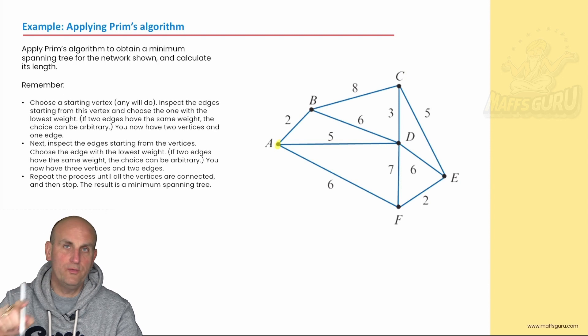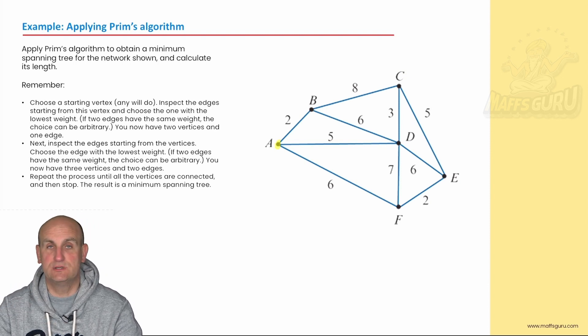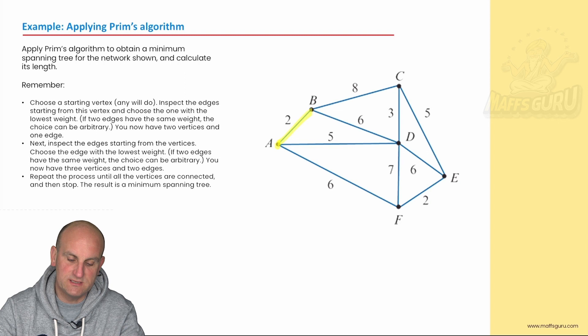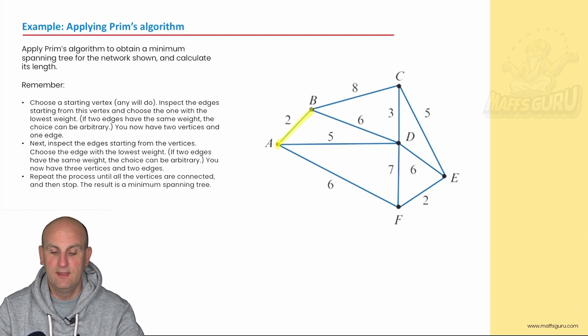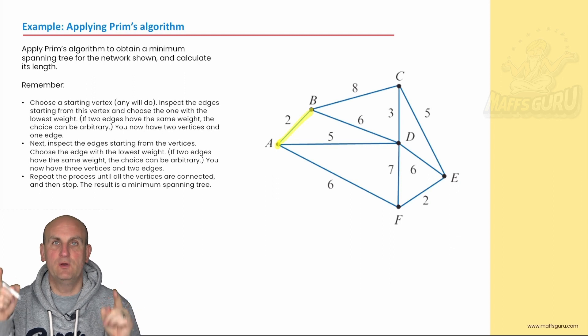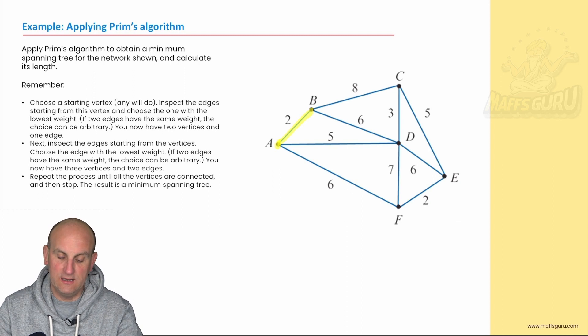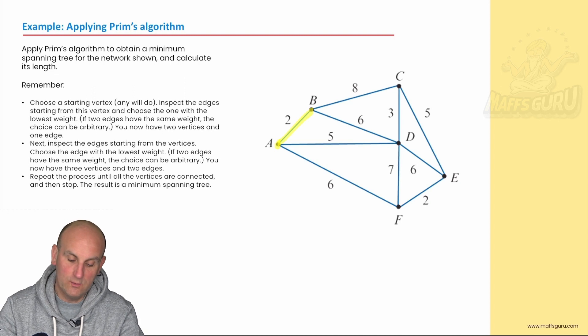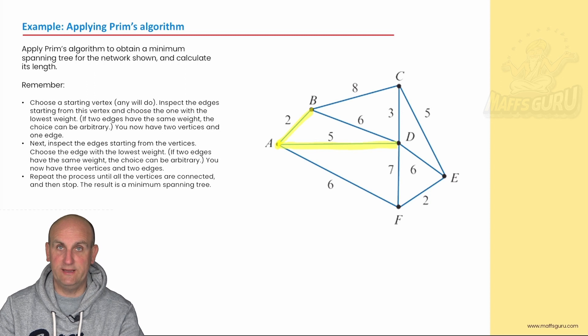Now, you look at all the lines that are coming off A and you choose the smallest one, because again, the minimum spanning tree, we want the minimum distance to get me around this network. Well, in that situation, the minimum distance is two. Ka-ching, there's my first part. Now, I've got A and B connected. I'm looking for the next smallest line that comes off of either A or B. And if we look at it, we've got an eight coming off B, we've got a six coming off B, we've got a five coming off A, we've got a six coming off A. So, which is the smallest value? Well, in that situation, it is the five. So, there we go. I've now got three points connected.